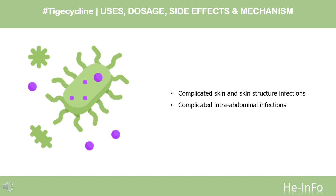Streptococcus anginosus group (includes S. anginosus, S. intermedius, and S. constellatus), Streptococcus pyogenes, and Bacteroides fragilis.